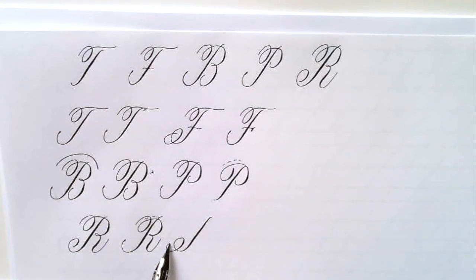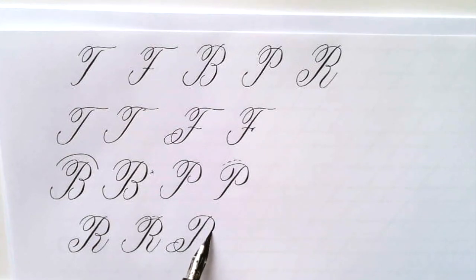Trying that again with the other loop like the P and staying in the ascender space and then coming down at the waistline.